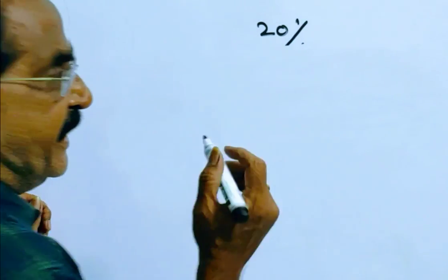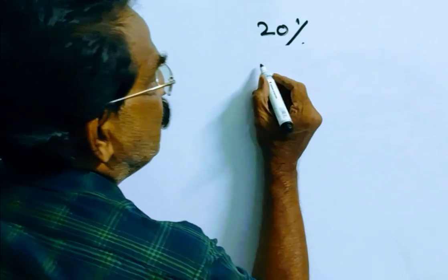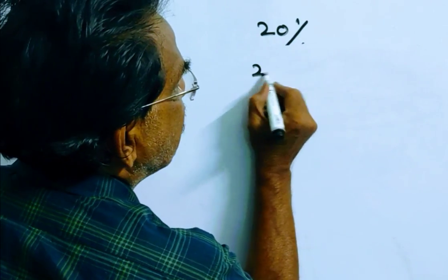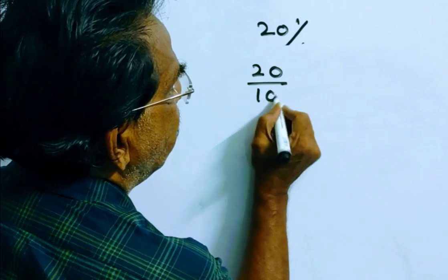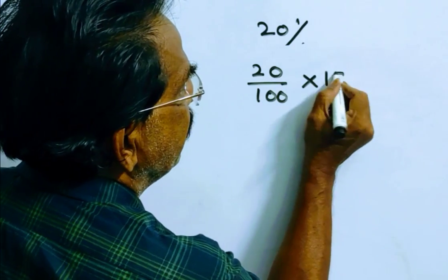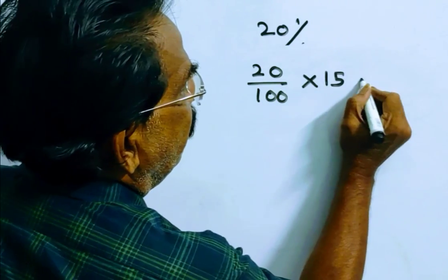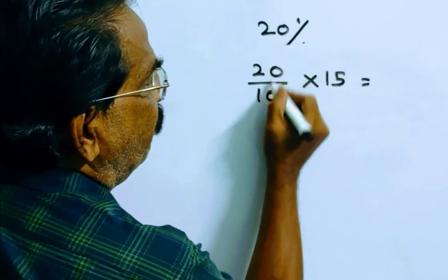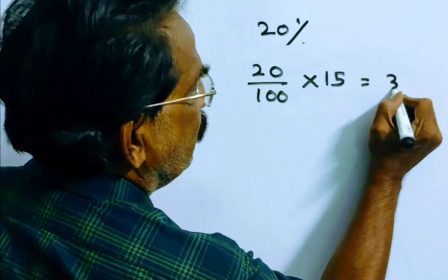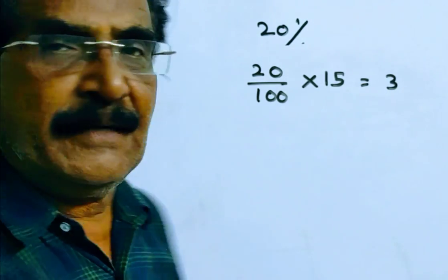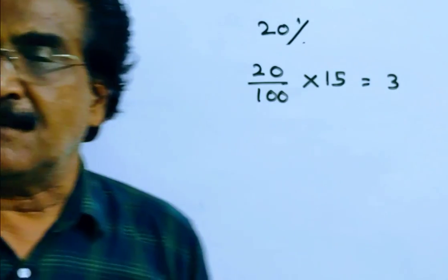So, let us find the reduction. 20 percent of 15 is 3, so the reduction is 3 rupees.